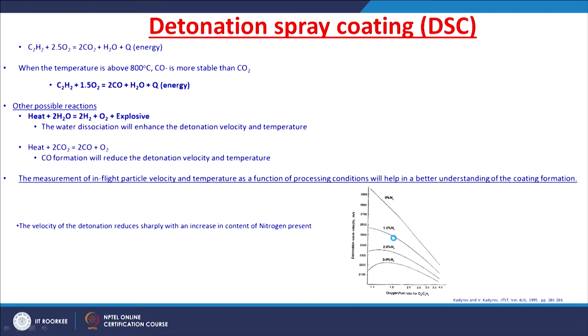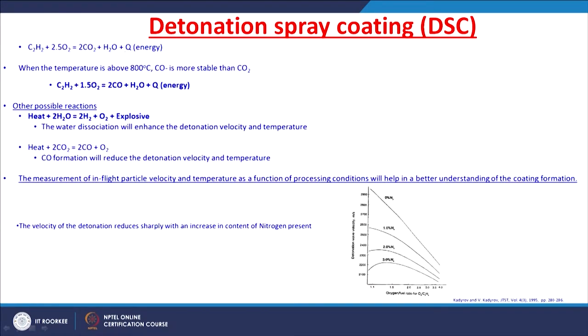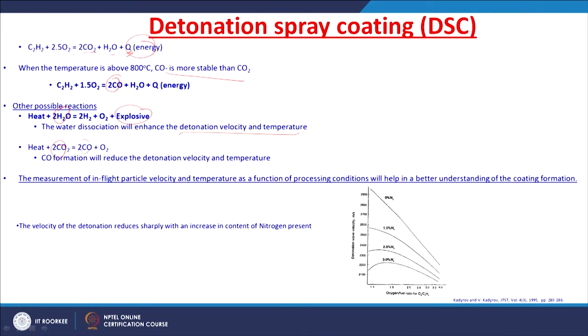Looking at the energy released in the detonation process: the acetylene and oxygen gas mixture combustion gives carbon dioxide, H₂O, and energy. When temperature exceeds 800°C, carbon monoxide is more stable than CO₂, so the products become CO and H₂O. Additionally, the heat reacts with H₂O to give hydrogen and oxygen, enhancing detonation velocity and temperature through water dissociation.